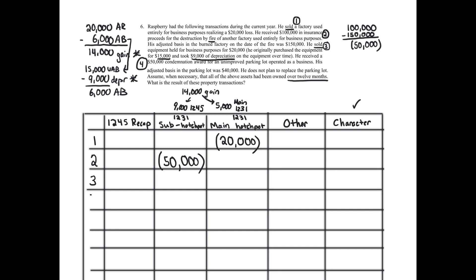So we actually have two rows here. We put $9,000 in Section 1245 — that's going to be considered ordinary income. The remaining $5,000 goes in the main hodgepot. We have to separate the rows because that first row is automatically considered Section 1245 ordinary income — there's nothing that can change that. The $5,000 in the main hodgepot we've got to net later on.